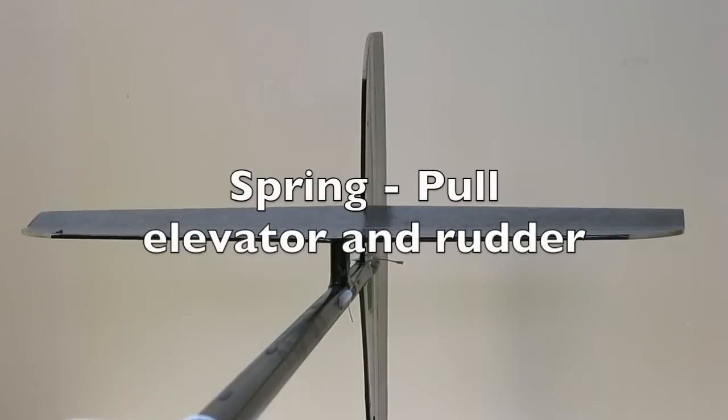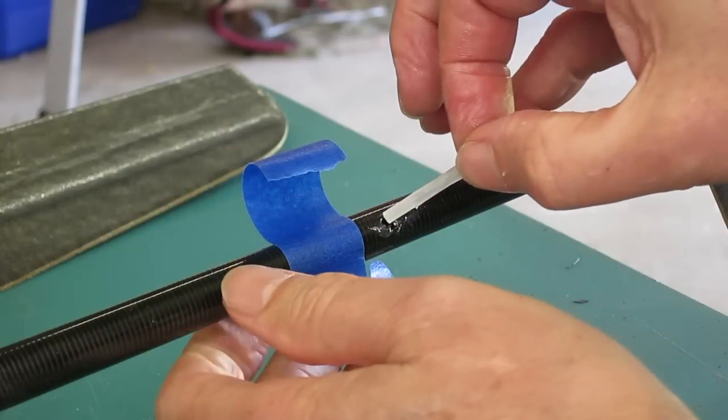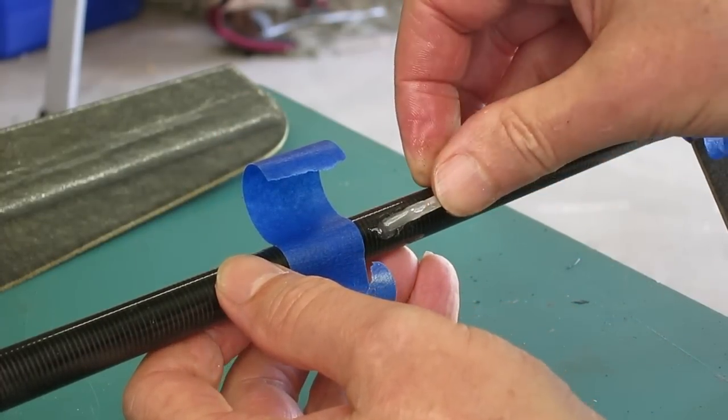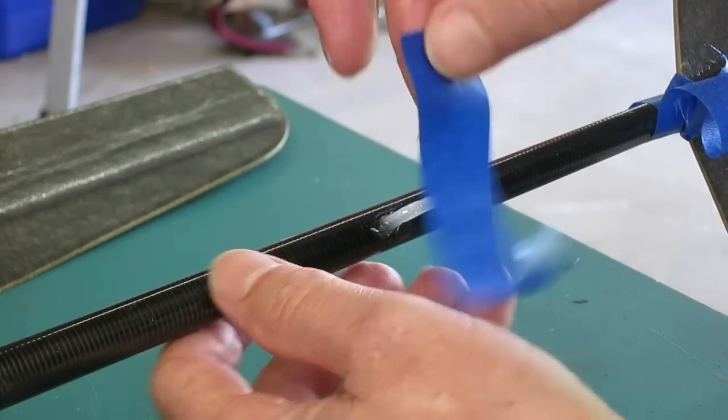This is part 3 of my V2DLG mods and assembly, fitting the spring pull system for elevator and rudder. I showed how to form the exit holes for the pull line in part 2, so I won't repeat that here. It's easier to do it before you put the elevator on.